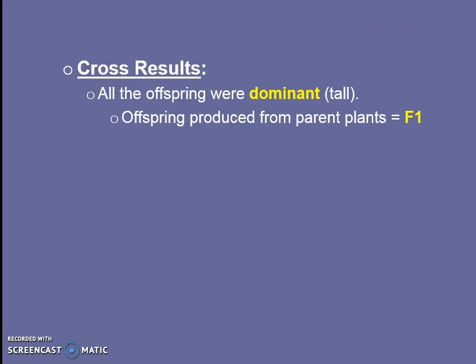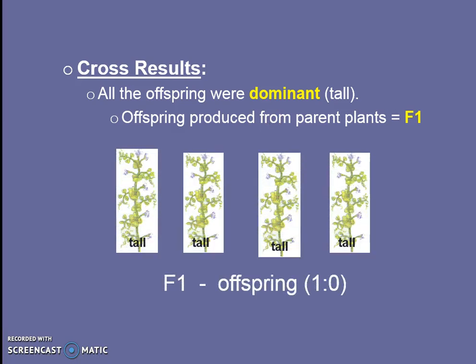Maybe it was a mixture. The cross results — the mating results — were that all the offspring were dominant, or tall. We call the offspring the F1 generation: F for offspring, first generation of offspring. They all look tall. We could say they are 100% tall, or they have a ratio of one tall to zero short. Wow — 100% tall.